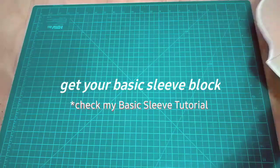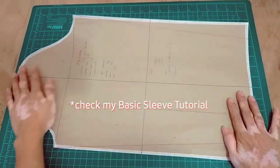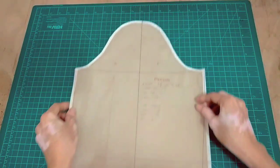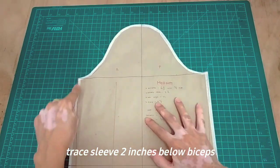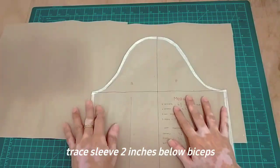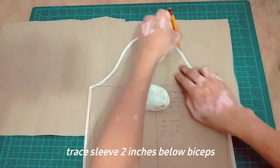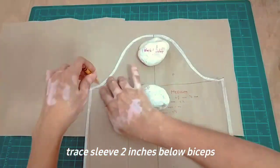First we need a basic sleeve block. I use medium size traced sleeve 2 inches below the biceps, so hanggang 2 inches from the biceps.